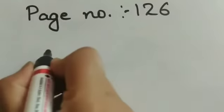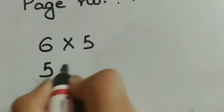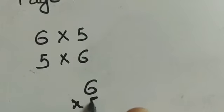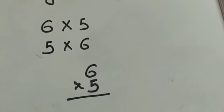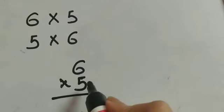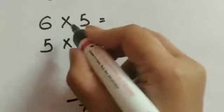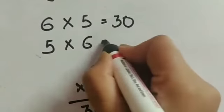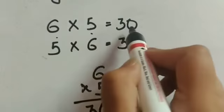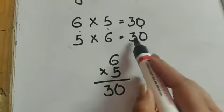6 into 5, or 5 into 6. So 6 into 5 — 5 1's are 5, 5 2's are 10, 5 3's are 15, 5 4's are 20, 5 5's are 25, 5 6's are 30. So 6 into 5 is equals to 30. And here 5 into 6 is also equals to 30 — read the table of 6: 6 5's are 30 and 5 6's are 30. In both cases the answer is 30.